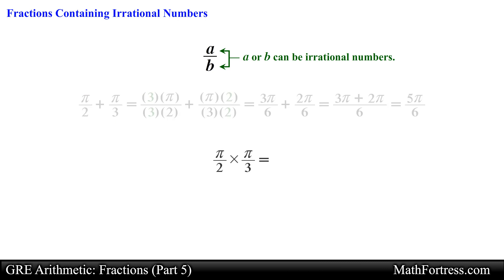In the same manner we can multiply these two numbers together: pi/2 times pi/3. Multiplying across gives us the final answer equal to pi squared over 6.